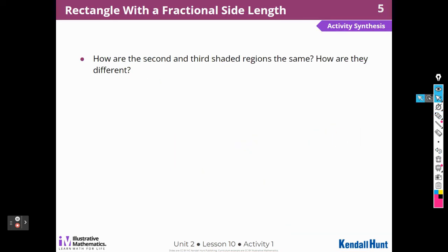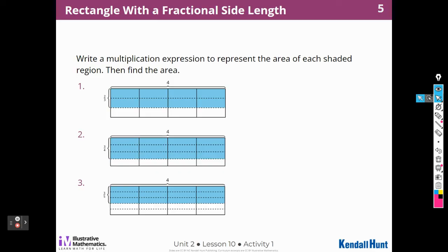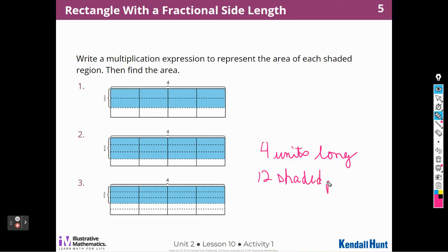Let's move on to the next activity: how are the 2nd and 3rd shaded regions the same, and how are they different? They're the same because they're all 4 units long, and there are 12 shaded pieces each. The 12 pieces in the 2nd example are each 1 fourth of a square unit, and in the 3rd they are each 1 fifth of a square unit. So that's how they're different.